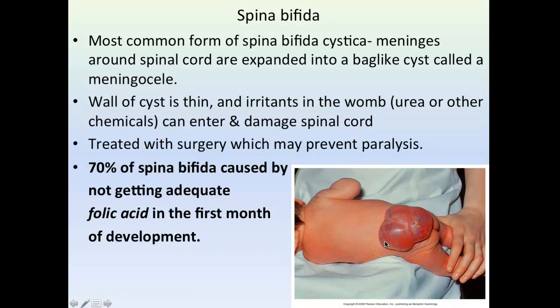Spina bifida can cause paralysis and many problems. Importantly, 70% of spina bifida cases are caused by not getting adequate folic acid in the first month of development. Folic acid, which can be broken down by excessive UV radiation, is a vitamin responsible for sealing the neural tube. So it's very important that women get enough folic acid in their diet in those early weeks of pregnancy.